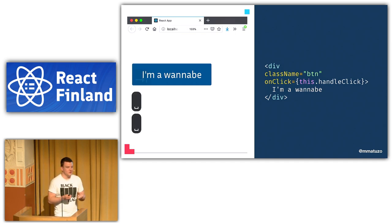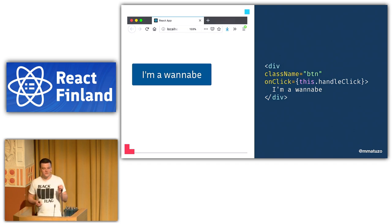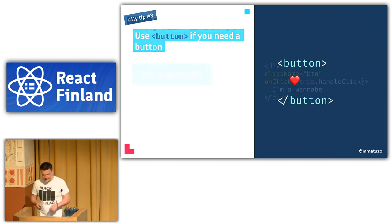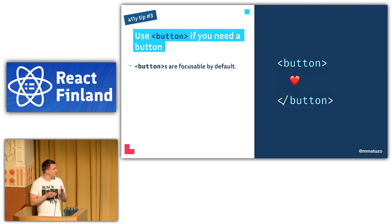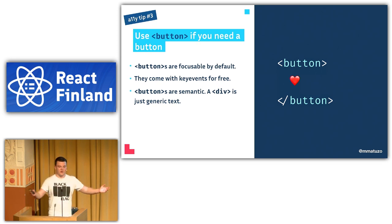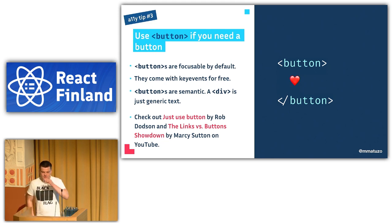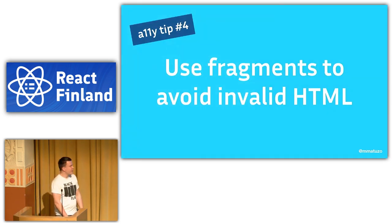With a div styled to look the same, clicking works but keyboard focus does nothing — a div is not focusable by default. Even if I add tabindex, pressing Enter or Space does nothing because key events come for free only with a button element. Buttons are focusable by default, come with key events for free, and are semantic — a screen reader will announce 'button,' whereas a div just says generic text. Please use HTML buttons.